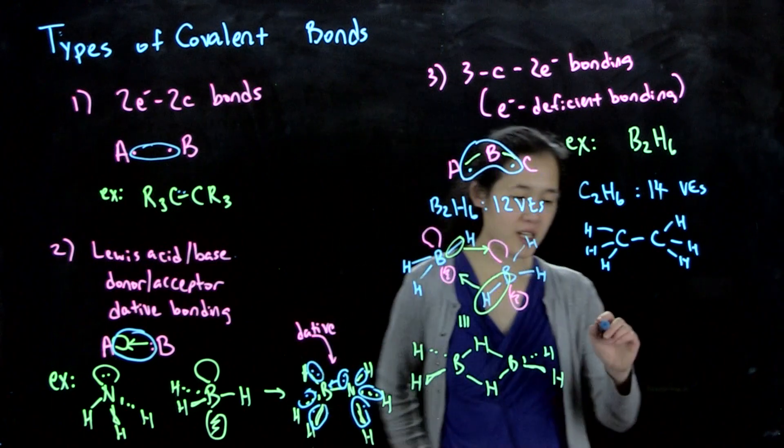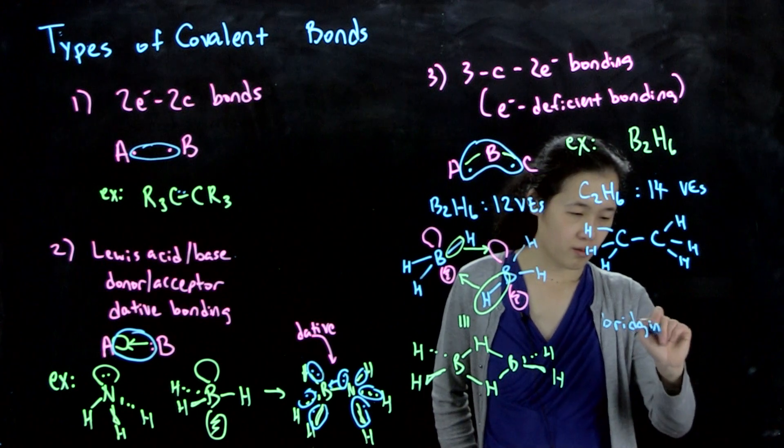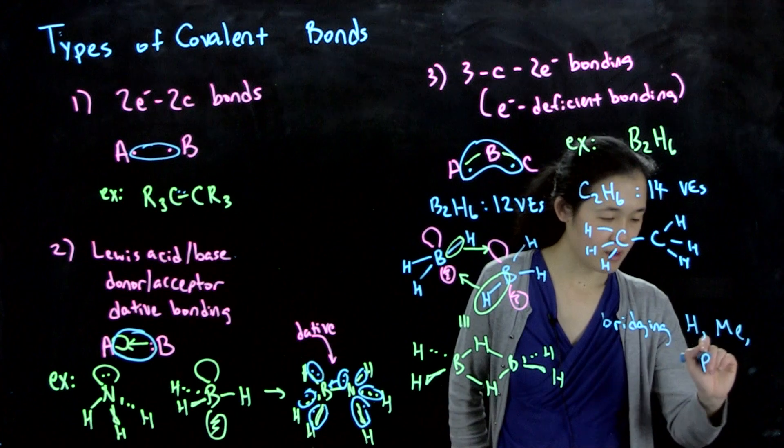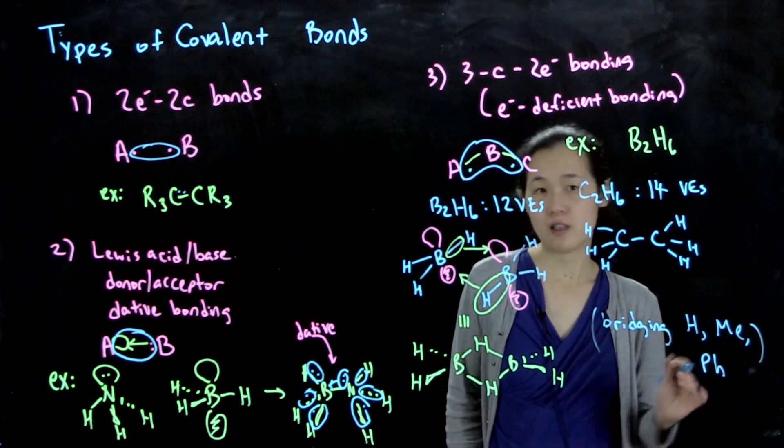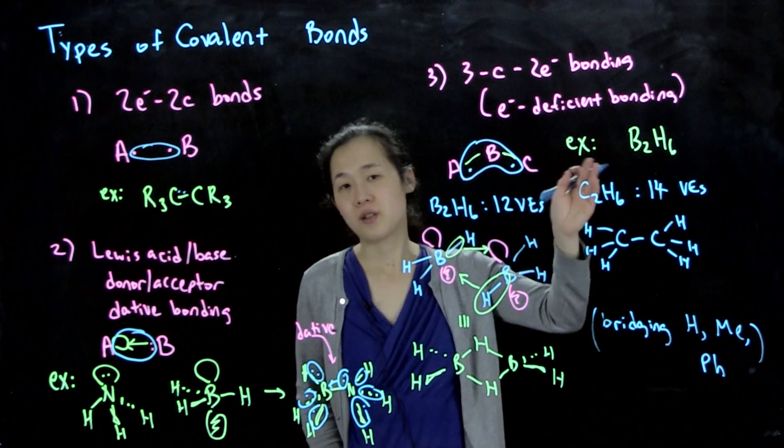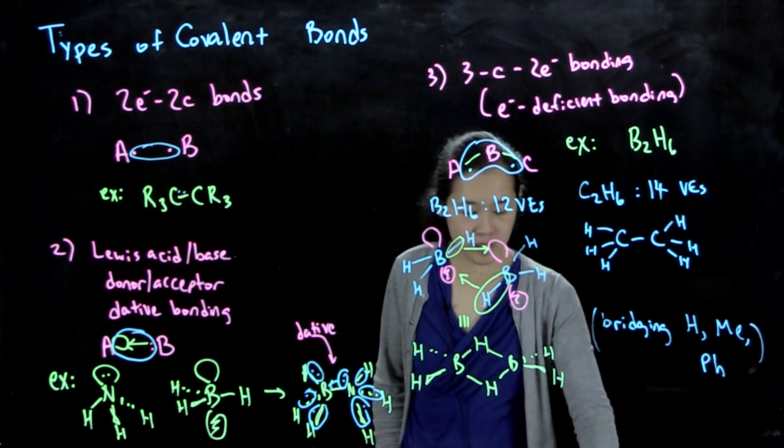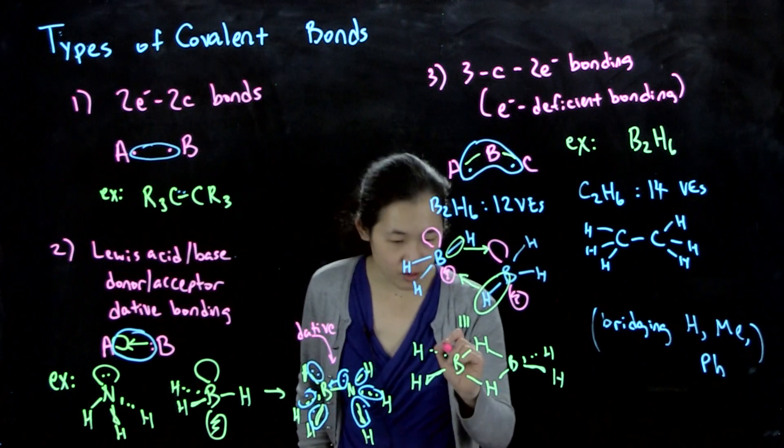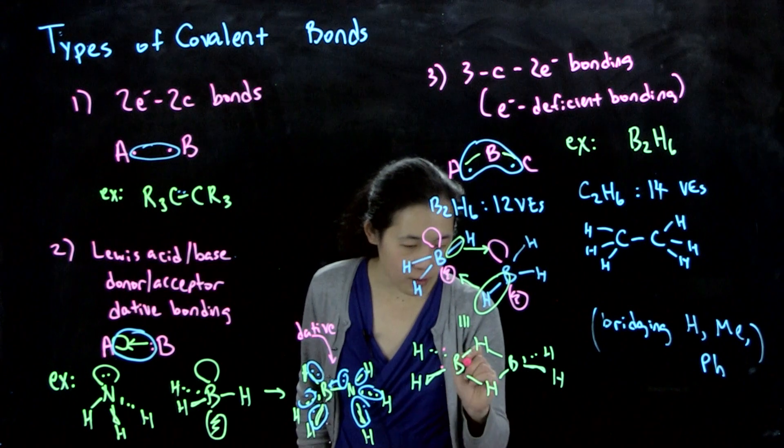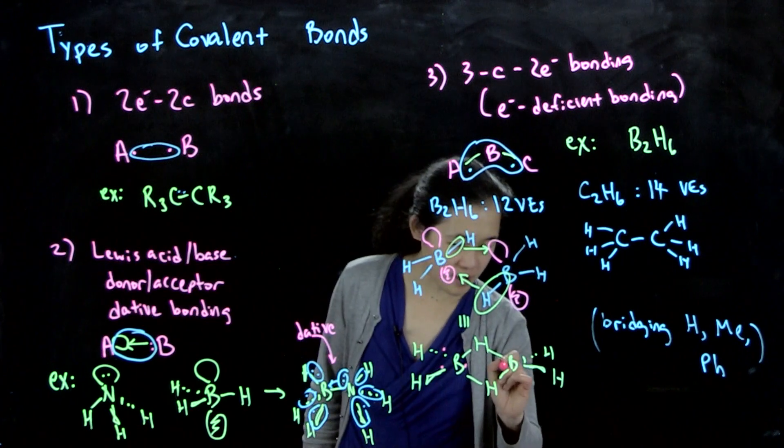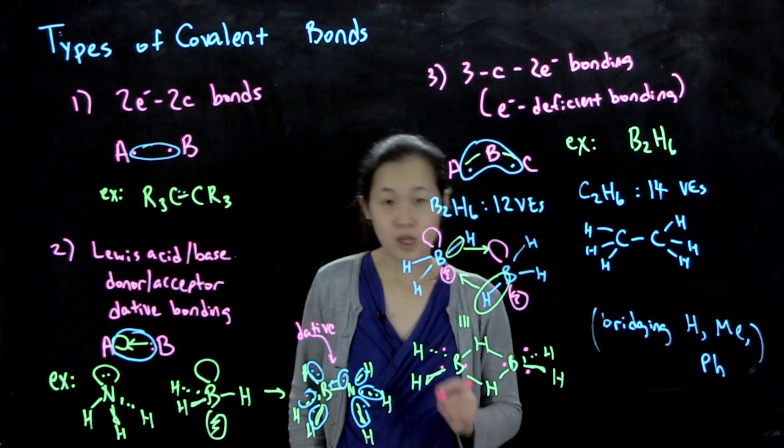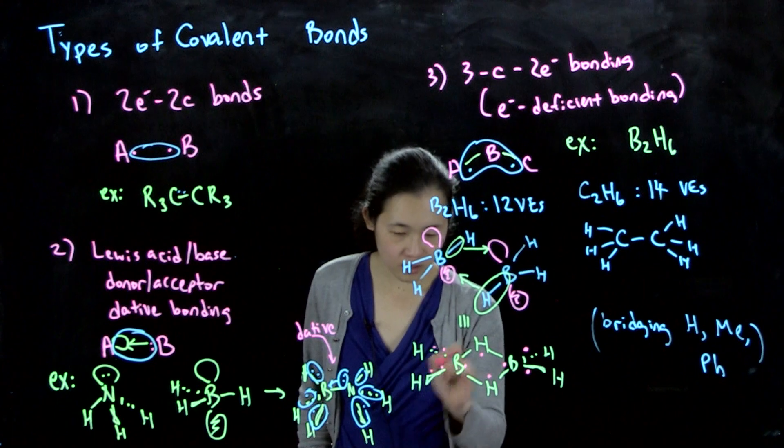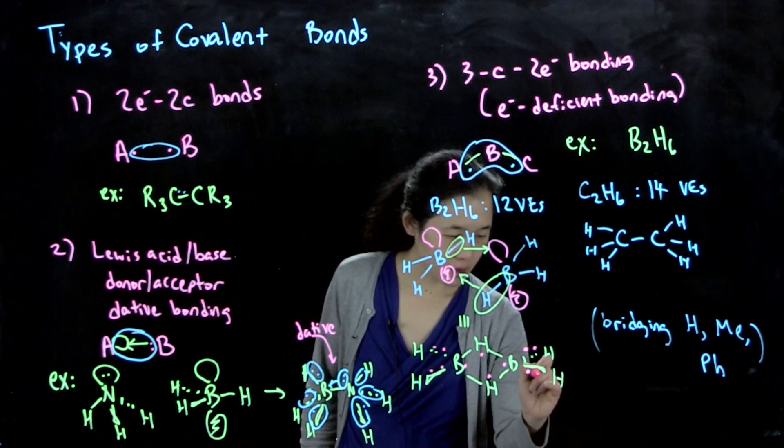We have these bridging hydrogens. If you have bridging hydrides, methyls, or sometimes aryls like phenyl, then typically you have electron deficient bonding, three center two electron bonds. We can do that electron counting. Boron has three valence electrons. Hydrogen has one electron each.